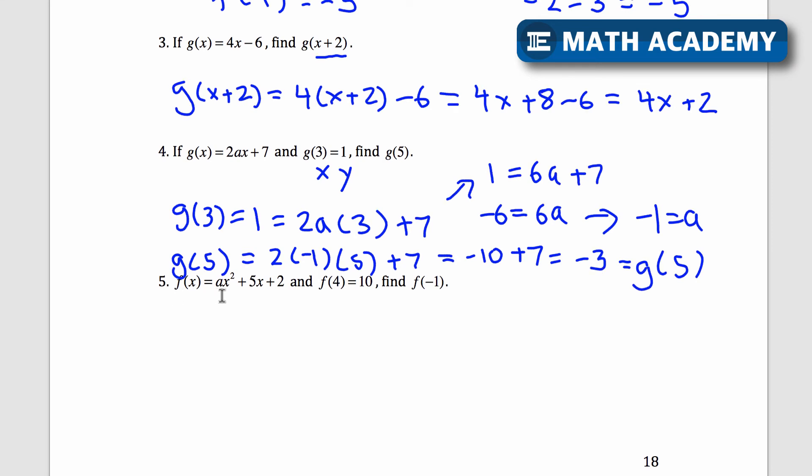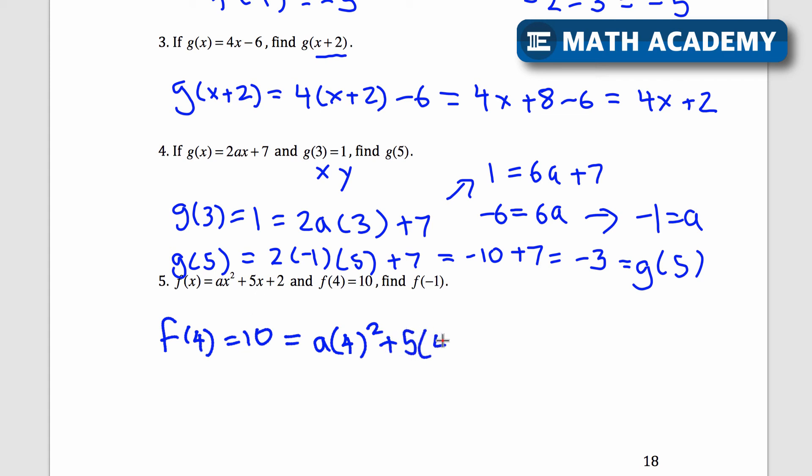Number 5 says f of x equals ax squared plus 5x plus 2. So that's the rule for my function for f. And f of 4 equals 10. Find f of negative 1. So this is a little bit more complicated than the last one even. But I know if I plug in 4 for x, I get an output of 10. So f of 4 is equal to 10. And that would be a times, in place of x, I'm putting in 4, f of 4. a times 4 squared plus 5 times x, which is 4 in this case. 5 times 4 plus 2. So the only variable I have here, the only unknown, is going to be a.